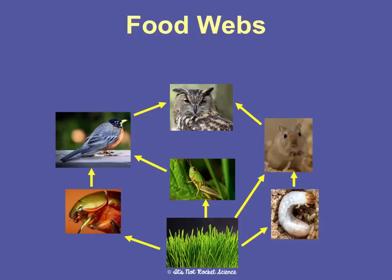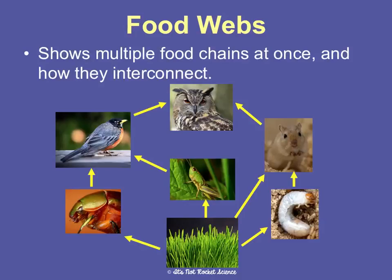A food web looks more complicated but it's really not bad — it's just showing multiple food chains at once and how they interconnect for a whole ecosystem. Notice the base is still a producer, still the grass. There are four different food chains here: grass to beetle to bird to owl, grass to grasshopper to bird to owl, grass to mouse to owl, or grass to grub to mouse to owl. All of these are different food chains within one food web.